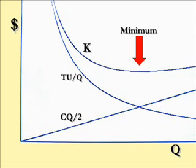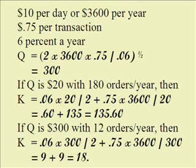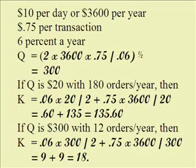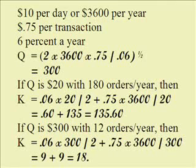Let's do a numeric example. Suppose someone uses ten dollars a day. With a 360-day year — that's what people do in finance and how they figure bonds — you have $3,600 per year for cash purposes. Let's say it costs 75 cents per transaction for the ordering cost to make a withdrawal, just for your time and effort, and six percent is what you earn on your money.